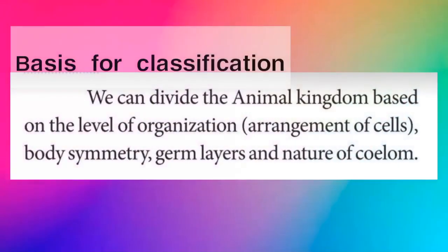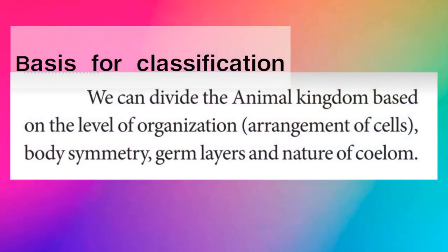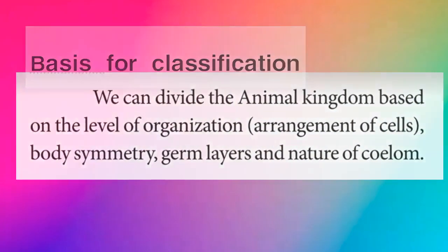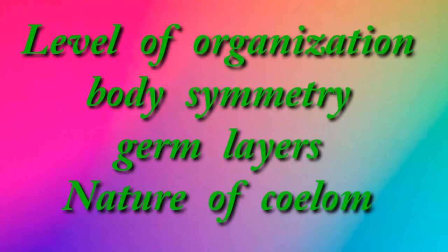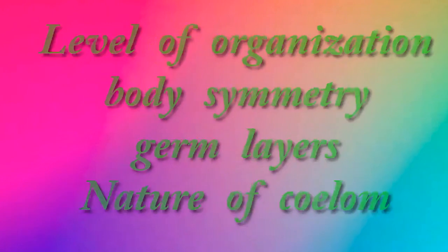Basis for classification. We can divide the animal kingdom based on the level of organization, body symmetry, germ layers, and nature of coelum. The animal kingdom is classified based on the level of organization, body symmetry, germ layers, and nature of coelum.